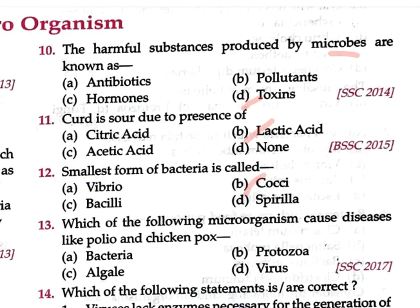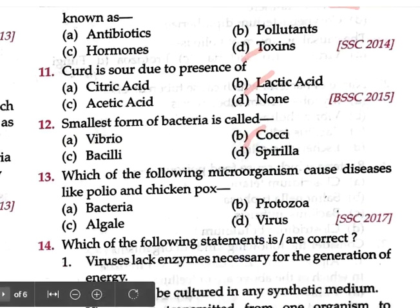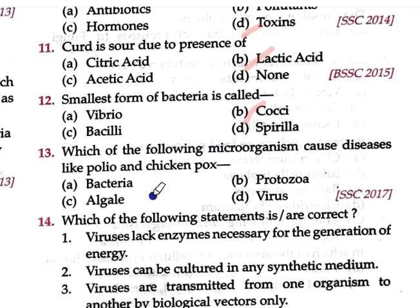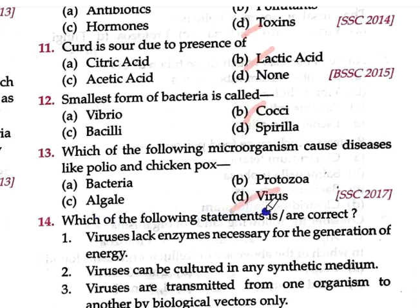Question number 13: Which of the following microorganism causes diseases like polio and chicken pox? A: Bacteria, B: Protozoa, C: Algae, D: Virus. The correct option is D — Virus. Viruses cause polio and chicken pox. (SSC 2017)